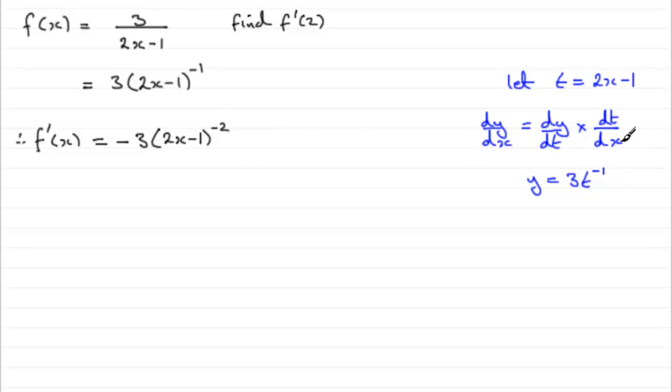And then we've got to multiply this by dt dx. We differentiate what we nominated t to be. So it's 2x minus 1, and if we differentiate with respect to x, we get 2.